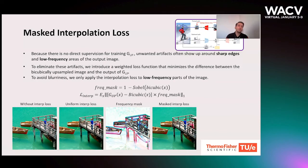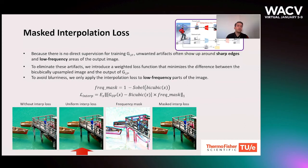Because there is no direct supervision for training the upsampler, ringing artifacts often occur around sharp edges of the output image. In addition, unwanted artifacts show up especially in the low-frequency areas of the output. To eliminate these artifacts, we apply a mask interpolation loss that encourages the upsampler to generate images similar to bicubic interpolation. We firstly generate a frequency mask by applying a Sobel operator to the bicubic upsampled image, then multiply this mask by the uniform interpolation loss. It encourages the upsampler to follow bicubic interpolation only in low-frequency areas and generates artifact-free sharp images.